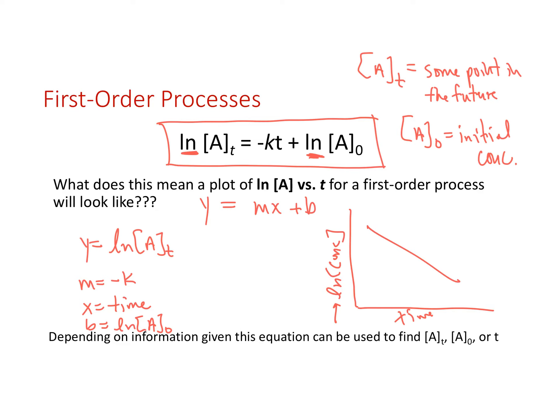Now we have a linear relationship between the natural log of concentration versus time. If I only collected data through a certain time, I could find the concentration at any point further out in time. And because it's a linear relationship, I can also find the change in concentration more accurately over the course of the reaction.